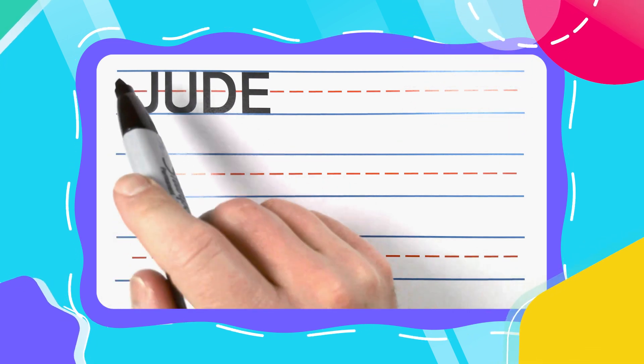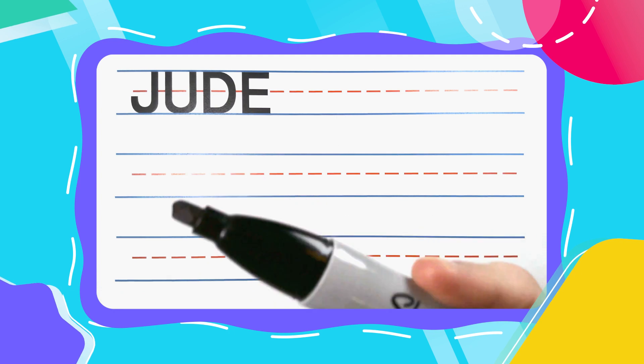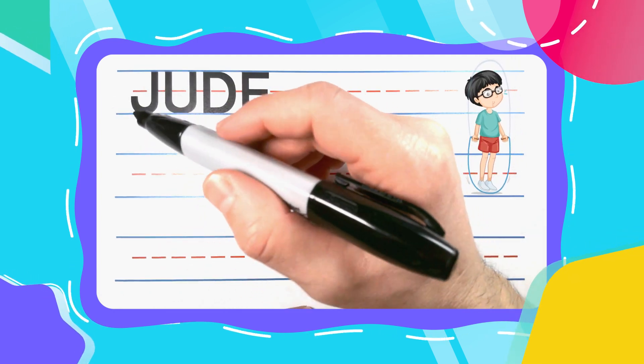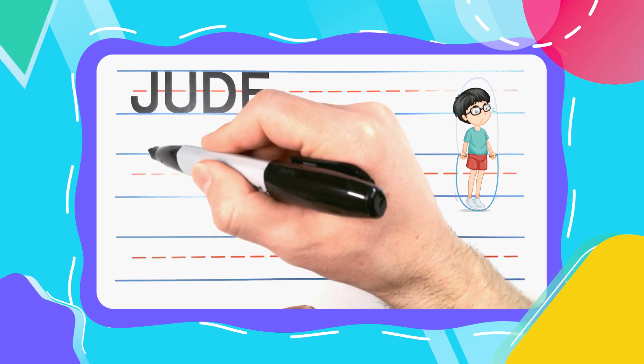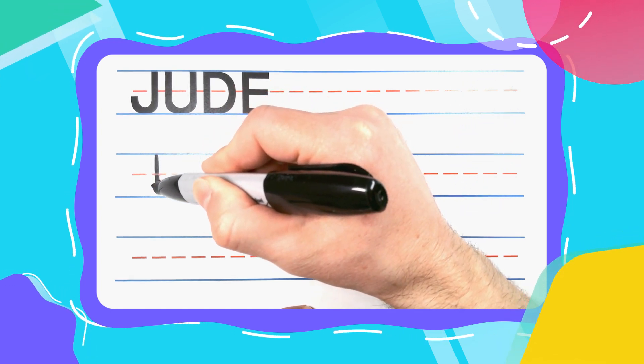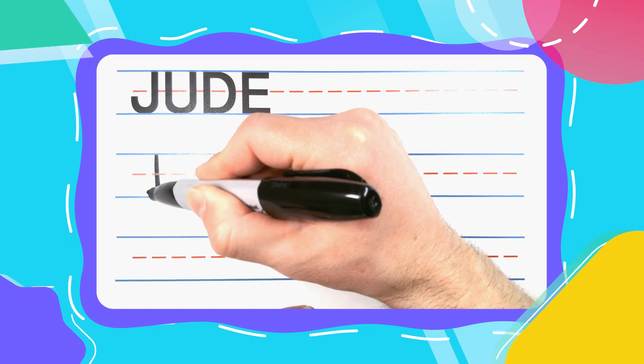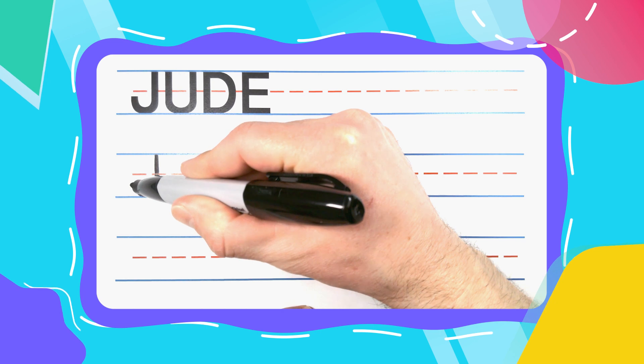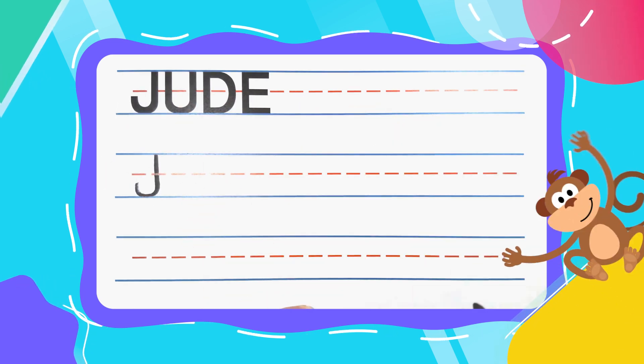Jude is spelled J-U-D-E. Now, let's get started with the Jumpin' J. And Jumpin' J's start at the top with a straight line down. Right before you get to the bottom, start to curve. Touch the bottom. Finish up to complete your Fish Hook J.